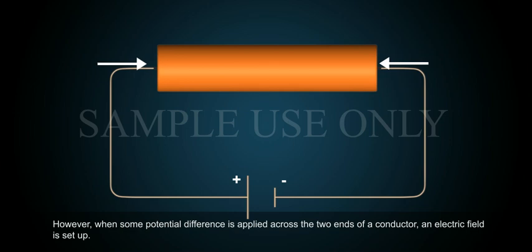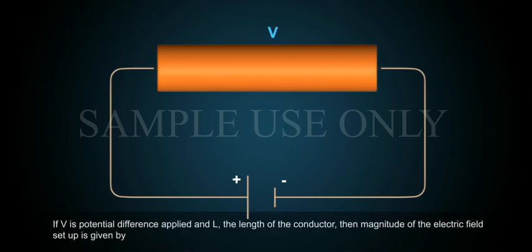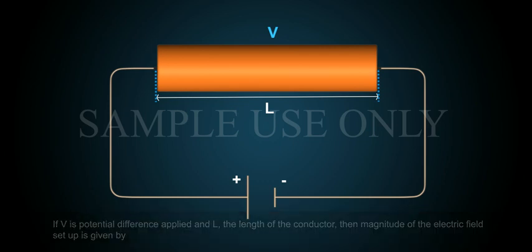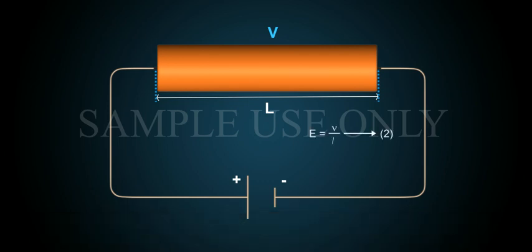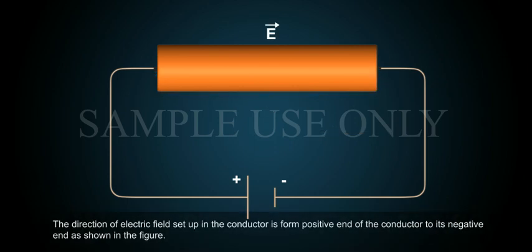However, when some potential difference is applied across the two ends of a conductor, an electric field is set up. If V is potential difference applied and L the length of the conductor, then magnitude of the electric field set up is given by E equals to V by L. Equation 2. The direction of electric field set up in the conductor is from positive end of the conductor to its negative end, as shown in the figure.